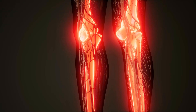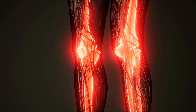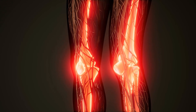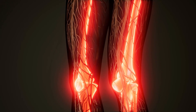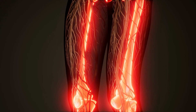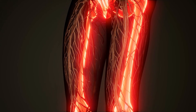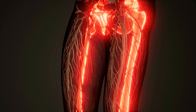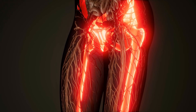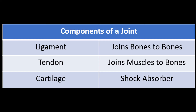There are three other components that make up each joint: ligaments, tendons, and cartilage. We don't need to know a great deal about these components, but we do need to know what they do. Ligaments are a fibrous tissue that join bones to bones. A tendon is a fibrous tissue that joins muscles to bones, and cartilage is a rubber-like padding that acts as a shock absorber to protect joints.